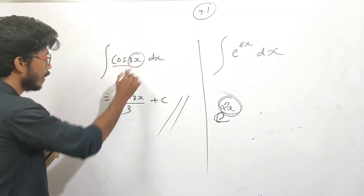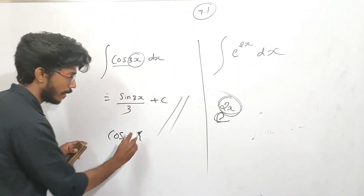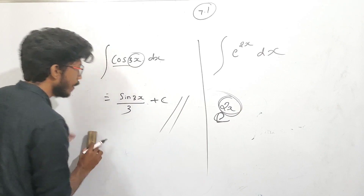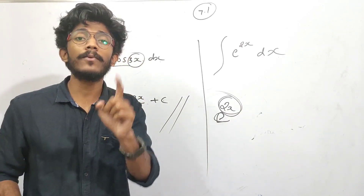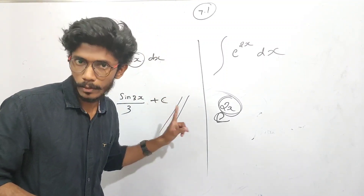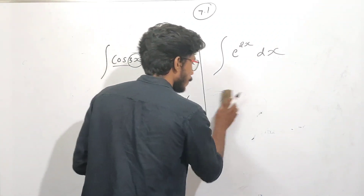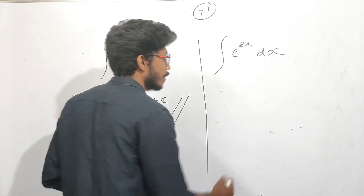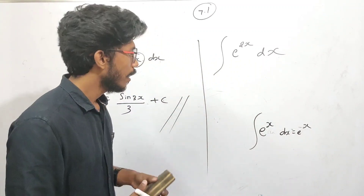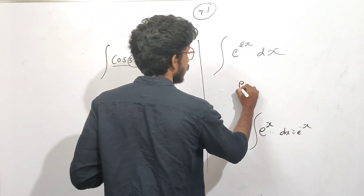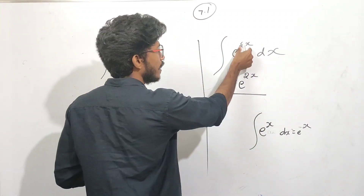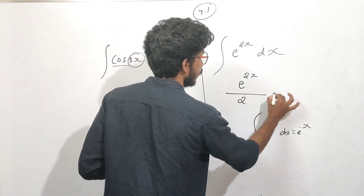If we have 2x as the inner function, then we can do this. Cos is equal to 3x — we can do this. It depends on the order: the outer function is equal to the first degree polynomial. We need to write the integral. For e raised to x, we have the outer function — the integral is e raised to x divided by the derivative of the inner function: 2x divided by 2, plus c.